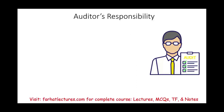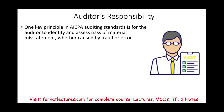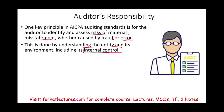Now let's move to the auditor's responsibility. One key principle in the AICPA auditing standard is for the auditor to identify and assess the risk of material misstatement — where could misstatement happen, whether caused by error, mistake, or intentional fraud. The auditor will need to understand the entity's environment — how they operate, in which environment they operate. Part of that is understanding their internal control: what are their policies and procedures to prevent those risks of material misstatements? Auditing standards mandate that the auditor must understand relevant internal control on every audit engagement.